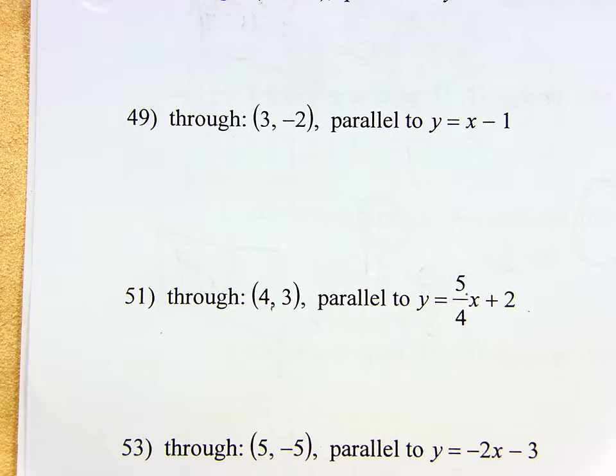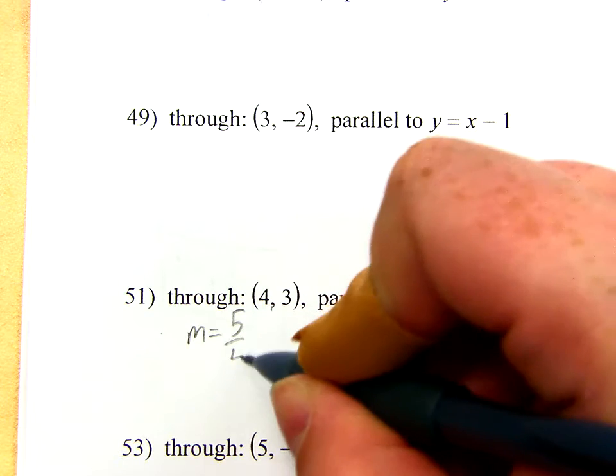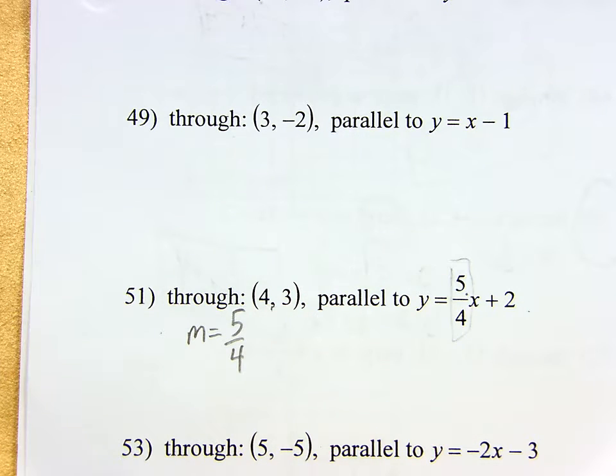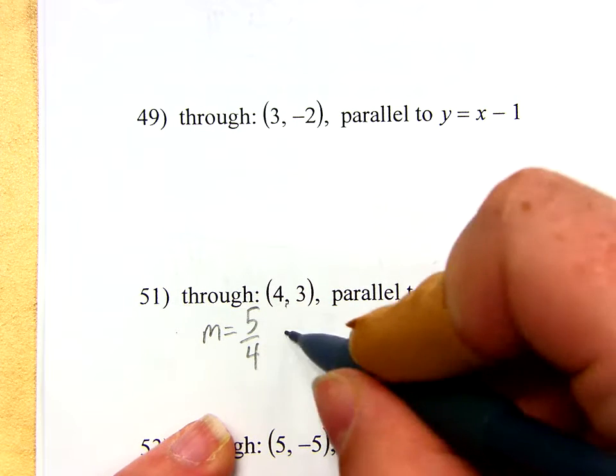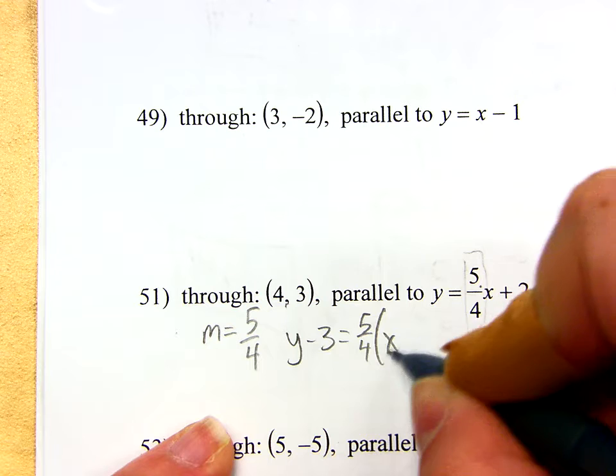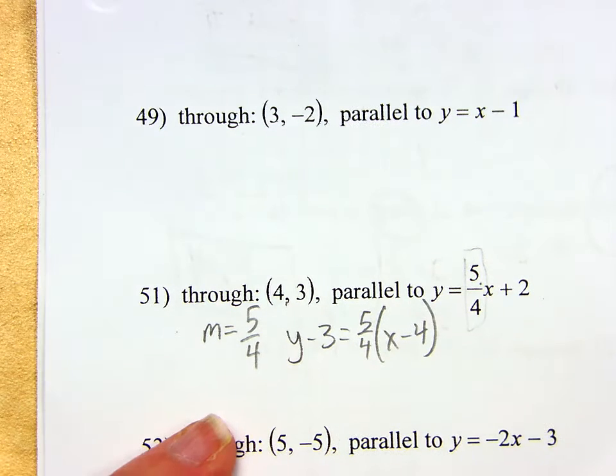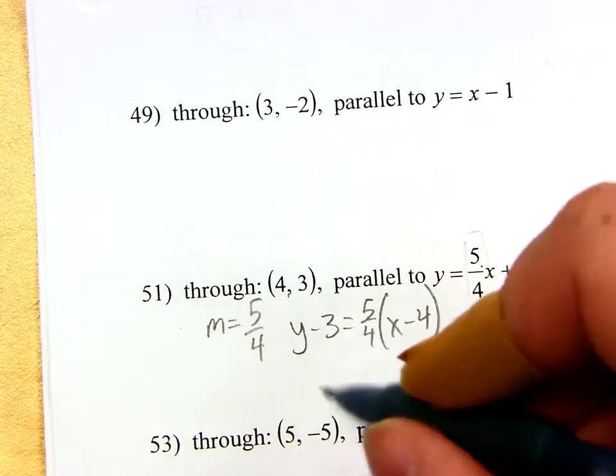This one I want it to be through this point parallel to this point. Well, parallel lines, what's the deal with the slopes? Exactly the same. So, my slope of this line has to be 5 fourths, the exact same as it was there. My slope is 5 fourths. Now, you have the slope and you have a point. So, you do just like you did before. Y minus 3 equals slope times X minus 4. You still got to end up in slope intercept form, which is annoying, but it's not so bad.